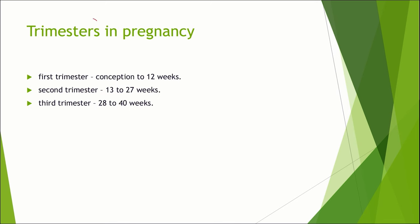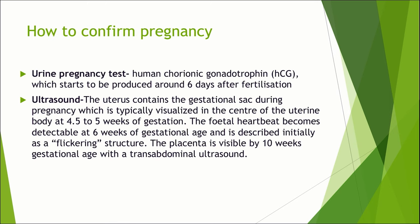How are we classifying the trimesters in pregnancy? The first trimester is the period between conception up to 12 weeks. The second trimester is from the 13th week to 27 weeks. The third trimester is from 28 to 40 weeks. So the first and third trimesters will be nearly 12 weeks each, and the second trimester will be slightly lengthier at 14 weeks.